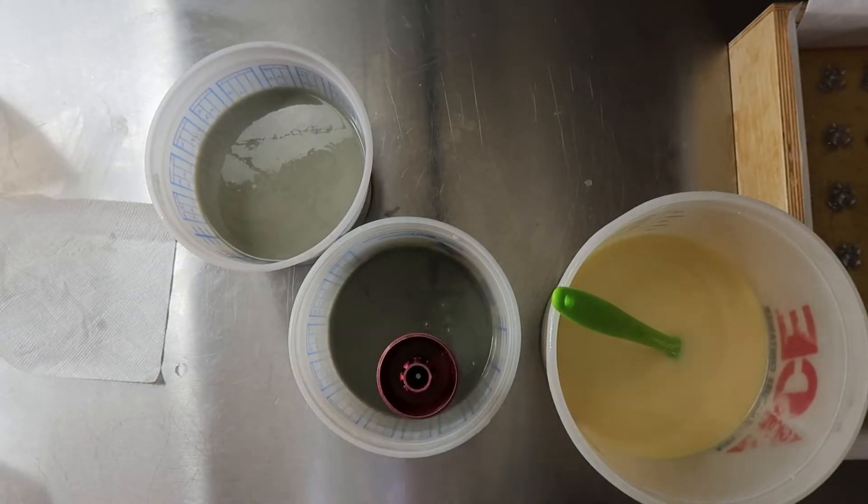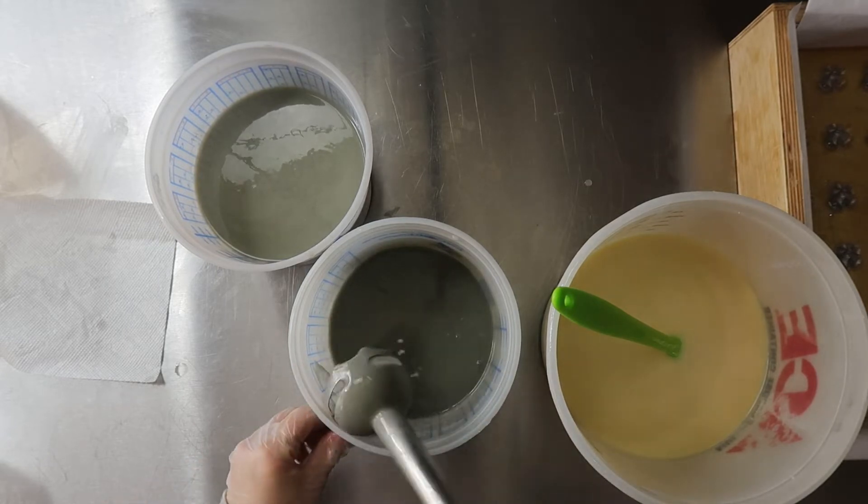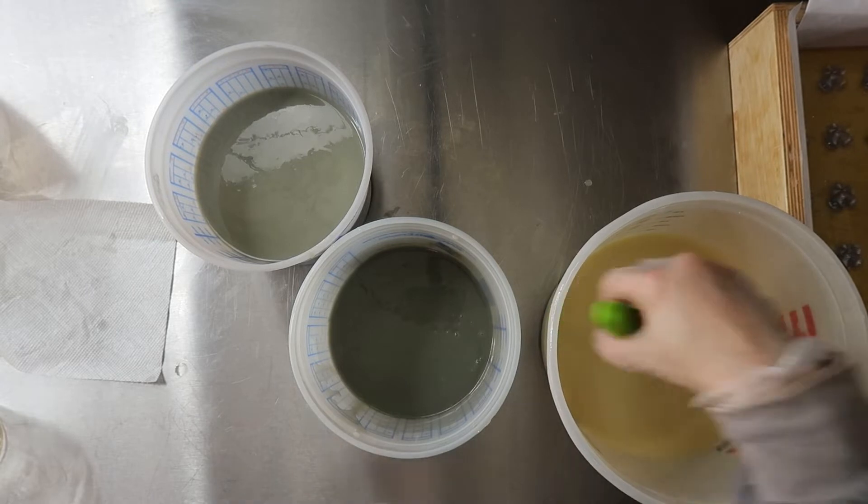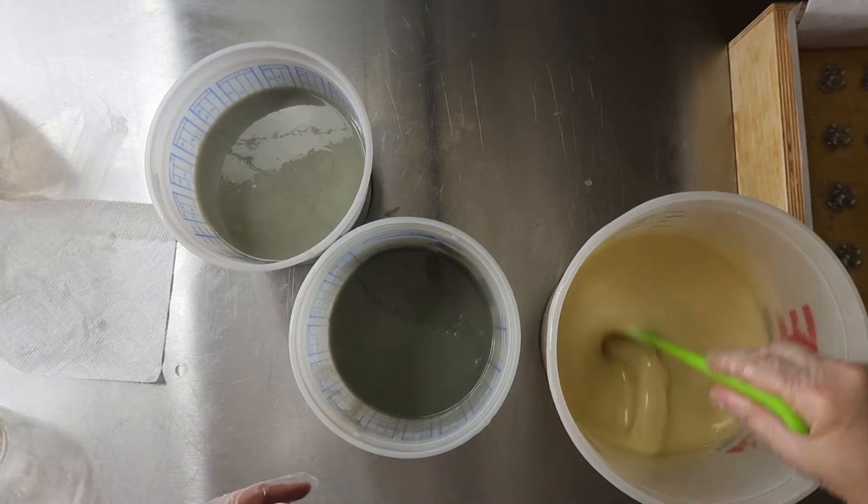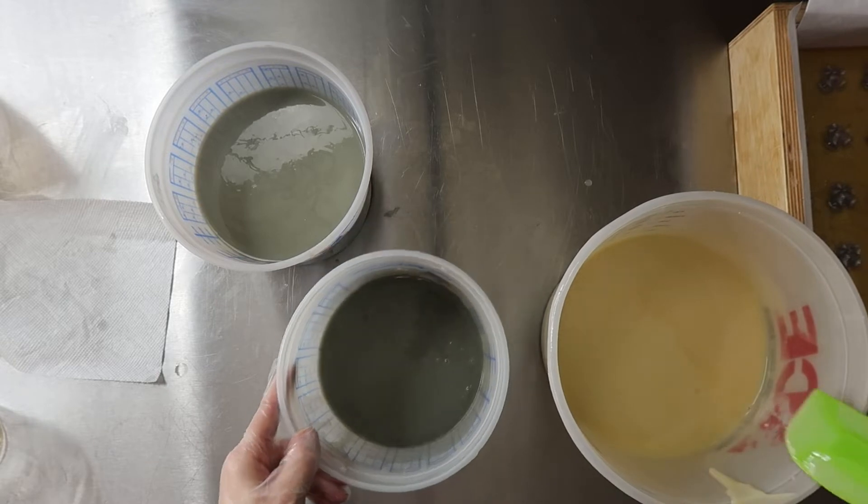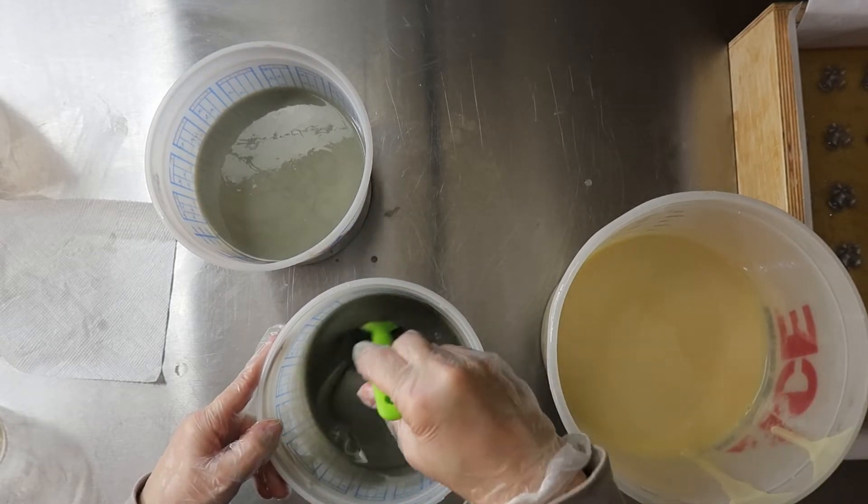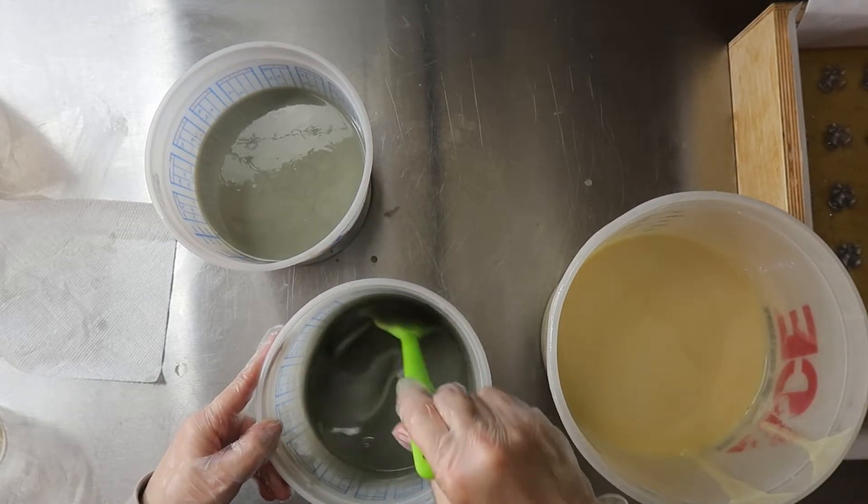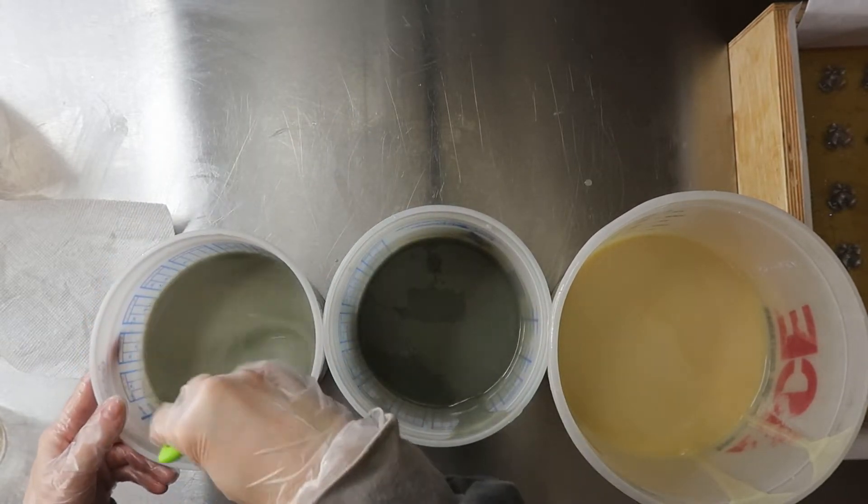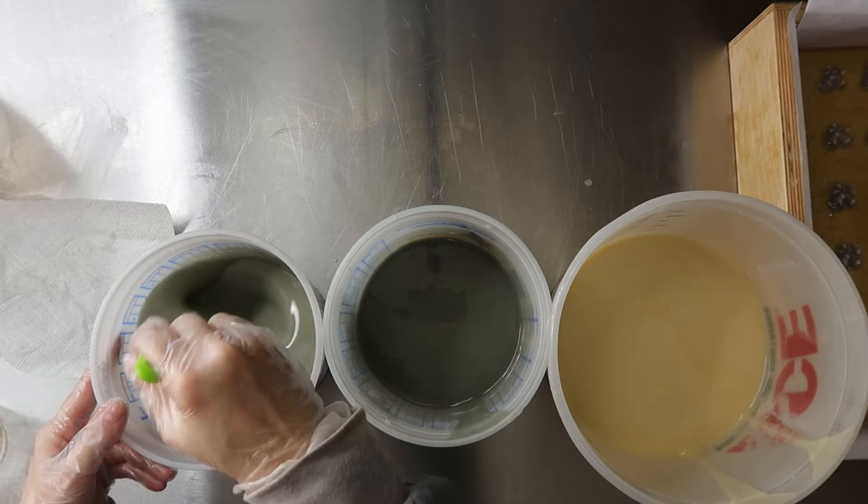So I always add the fragrance oil in if I can, if it's a well behaving fragrance oil with my stick blender, but usually I don't do it so early. But when I'm going to do an in the pot swirl and I don't want all the colors to kind of run together, I do want them to stay a little bit separate so you can just see different shades. But it is thickening up nicely.